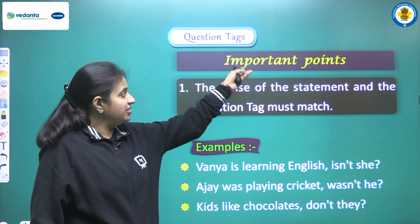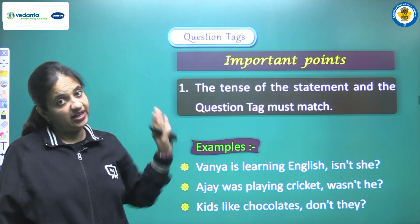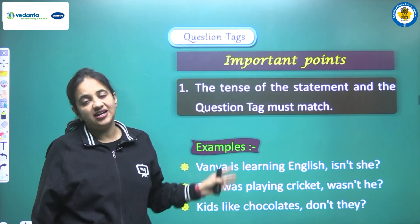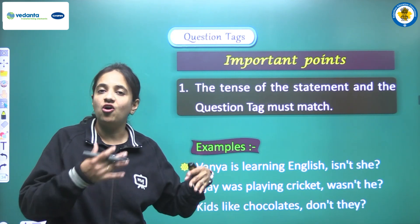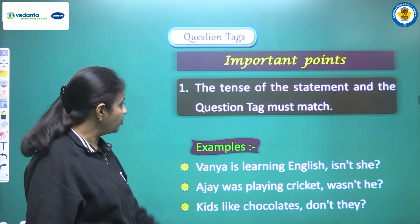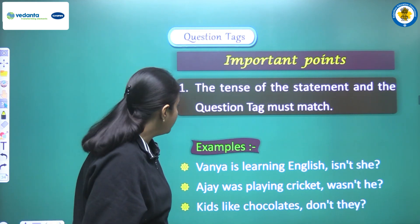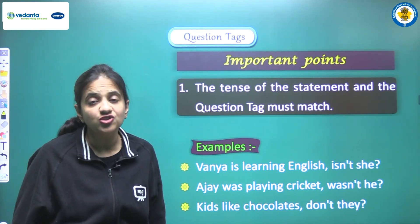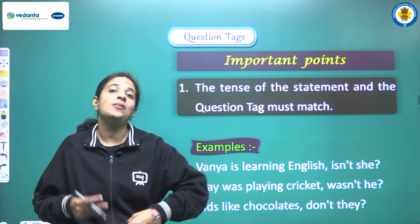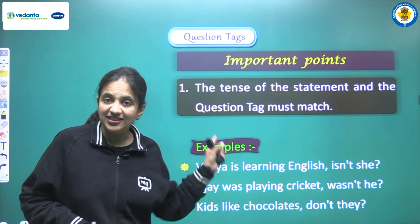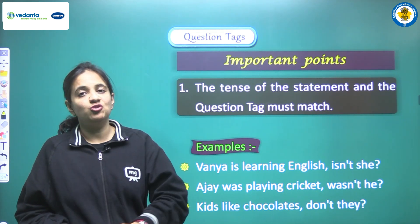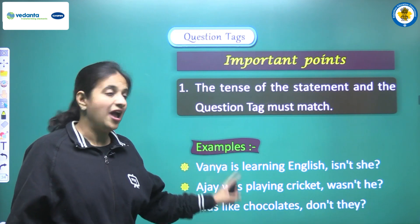Now we have some important points to take care of when adding a question tag to a sentence. These are the basic rules we have to follow. The first point is: the tense of the statement and the question tag must match. This is a very important point — we have to use the same auxiliary verb that is given in the sentence.